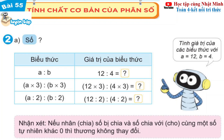Bài 2 câu A: Robot bảo tính giá trị của các biểu thức với A bằng 12 và B bằng 4. Biểu thức A chia cho B có giá trị bằng 12 chia cho 4 bằng 3. Biểu thức (A nhân 3) chia cho (B nhân 3) bằng (12 nhân 3) chia cho (4 nhân 3) bằng 3. Biểu thức (A chia cho 2) chia cho (B chia cho 2) bằng (12 chia cho 2) chia cho (4 chia cho 2) bằng 3. Nhận xét: nếu nhân hoặc chia số bị chia và số chia với cùng một số tự nhiên khác không thì thương không thay đổi.